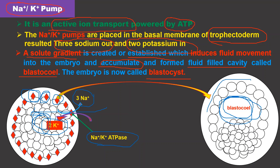The whole structure — the embryo at this time — is called the blastocyst. The blastocyst embryo has the blastocoel. That is how the blastocyst and the blastocyst embryo are formed. Thank you.